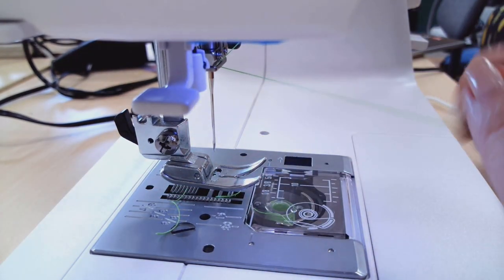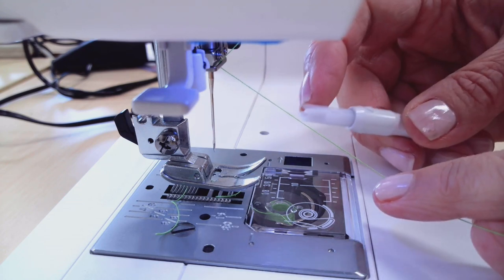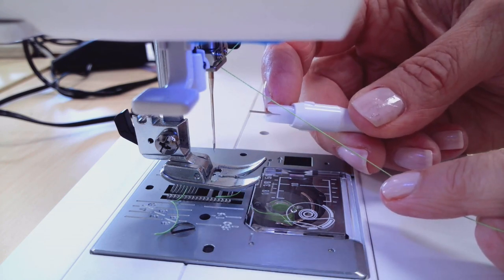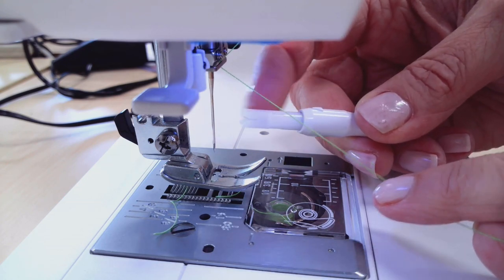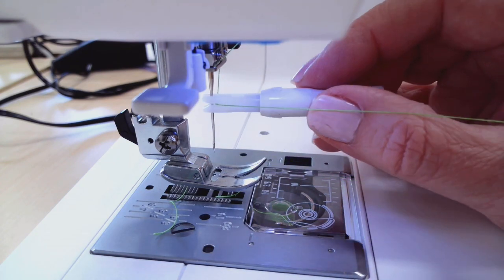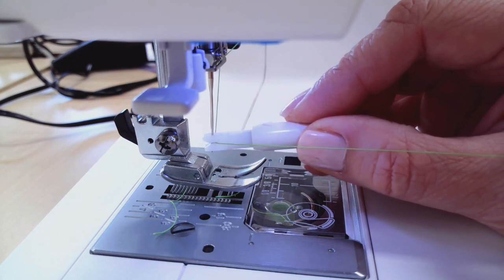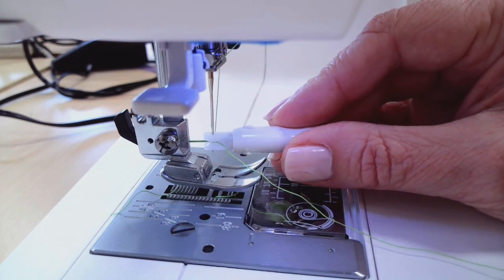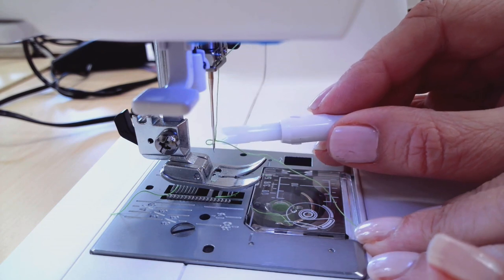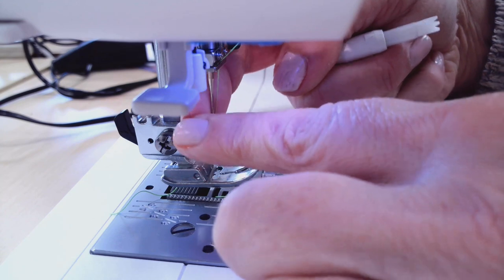So with a manual needle threader there's again that little tiny wire that's going to come through the eye of the needle. So our thread goes across and we slide the threader down and once it hits the eye of the needle we can push through and you'll see it pushes that little loop through there for you and then you can pull that loop of thread and your needle is threaded.